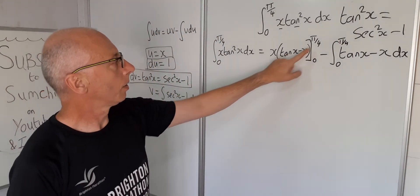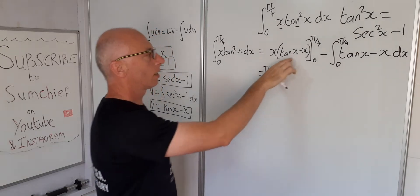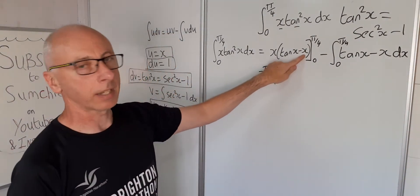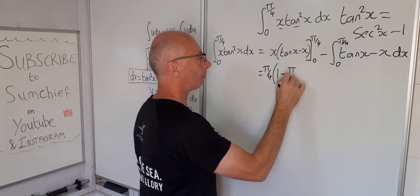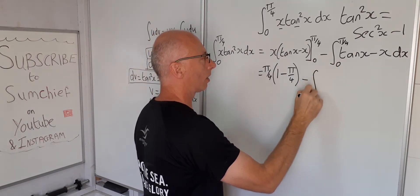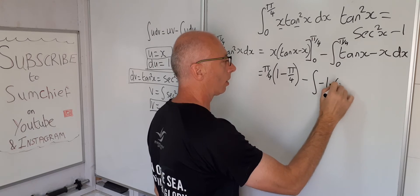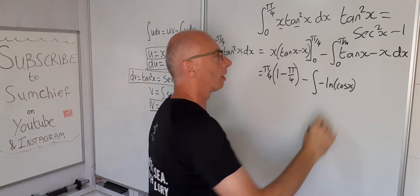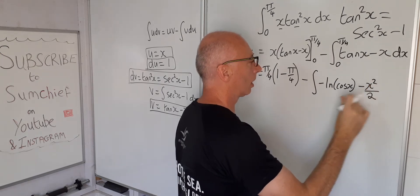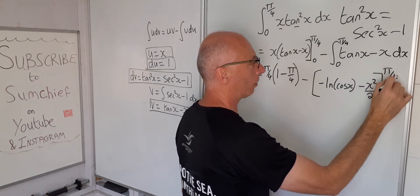We can plug in pi over 4 here. This gives us pi over 4 times (tan(pi/4) minus pi/4). Tangent of pi over 4 is just 1, and then minus pi over 4. Then we take the integral of (tan x minus x): the integral of tan x is minus log of cosine x, and minus x integrates to minus x squared over 2. That's evaluated from pi over 4 to 0.